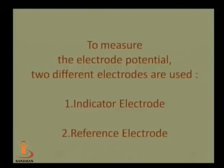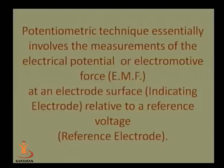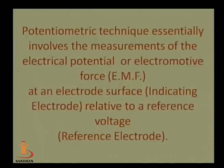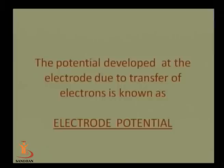To measure electrode potential, two different electrodes are used: the indicator electrode and the reference electrode. Potentiometric technique essentially involves the measurement of the electric potential or EMF at the indicator electrode surface, relative to a reference voltage from the reference electrode. The potential developed due to the activity of ions at the electrode — due to transfer of electrons — is known as electrode potential.